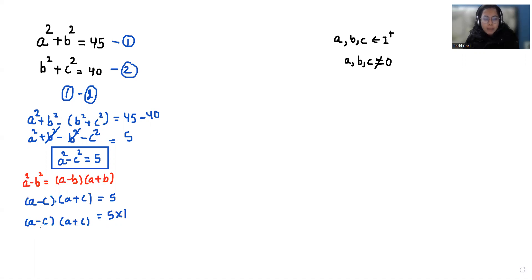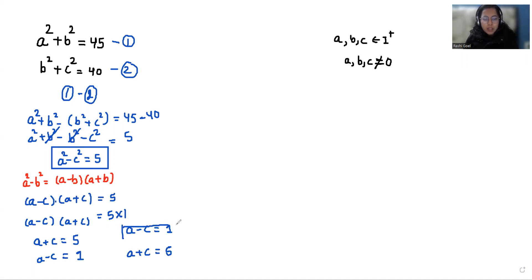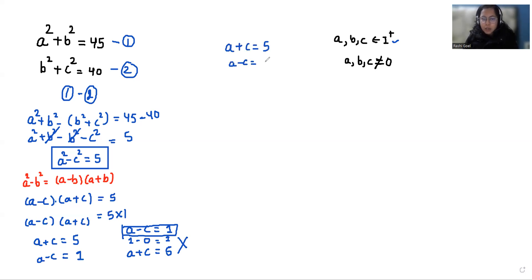So either a minus c equals 5 and a plus c equals 1, or a minus c equals 1 and a plus c equals 5. The case where a minus c equals 5 and a plus c equals 1 is not possible, because since a, b, c belong to positive integers and none can equal 0, that would force c to be 0 or a to be negative. So we reject that case and take a plus c equals 5 as equation 3 and a minus c equals 1 as equation 4.